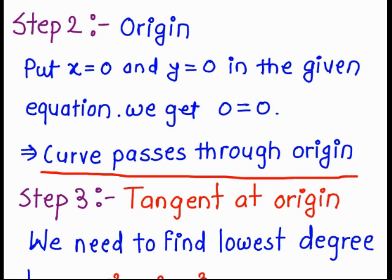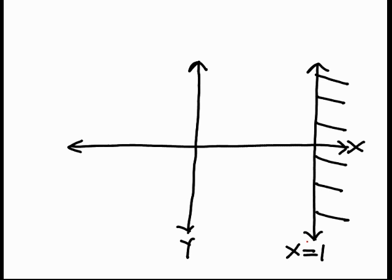So from step number 2, we get the curve is passed through the origin. So origin is a point on the curve.